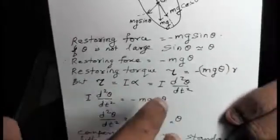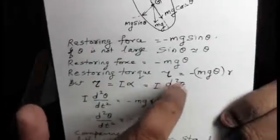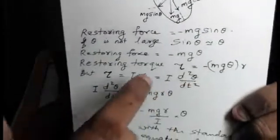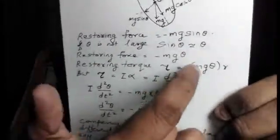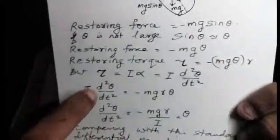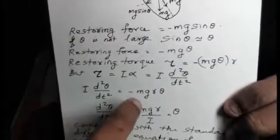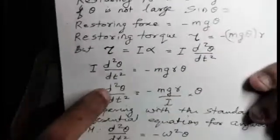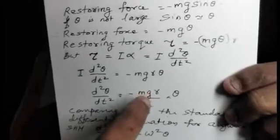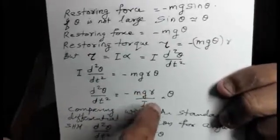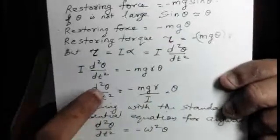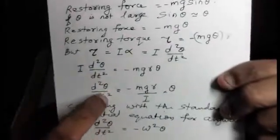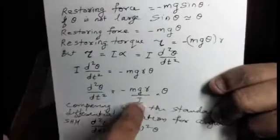So tau equals I alpha, that is I into d²theta/dt². Comparing, we get: I d²theta/dt² equals minus MgR theta. Or, d²theta/dt² equals minus (MgR/I) times theta. This means angular acceleration equals minus a constant times angular displacement.